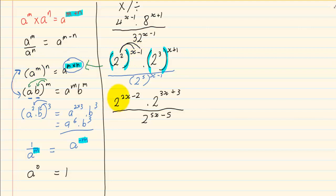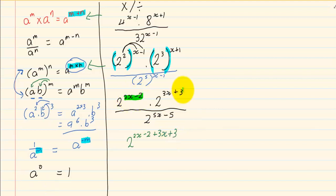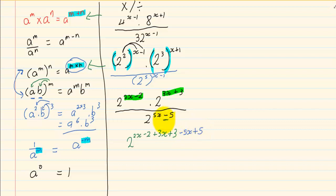Now we join the terms. They have the same base so we use 2 as our base. For the terms that are multiplying we use the first rule and add their powers: 2x minus 2, plus 3x plus 3. Because we are dividing we subtract the bottom exponent, changing the signs of the bottom, giving minus 5x plus 5. Collecting like terms: 2x plus 3x minus 5x gives 0, and minus 2 plus 3 plus 5 gives 6.